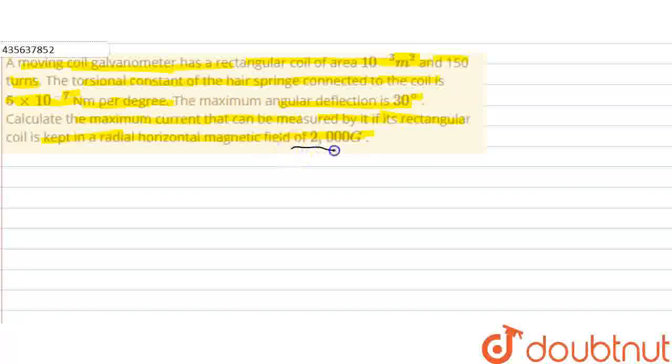So this is the magnetic field. This is the arrangement. This is the moving coil galvanometer. This is a soft iron core. This is the rectangular coil.